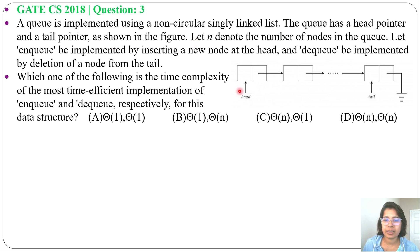This is the figure, this is our head and this is our tail. Let n denote the number of nodes in the queue. Let enqueue be implemented by inserting a new node at the head, and dequeue be implemented by deletion of a node from the tail. We can enqueue at head and dequeue at tail.